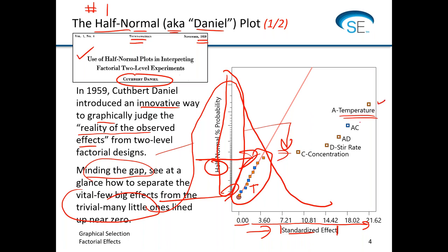As we continue picking off effects, the next biggest is the interaction of A with C (concentration), which also stands alone as a main effect. Then we have the A-D interaction, which includes parent term D, also chosen as a main effect. So we have an interesting family of effects involving A, C, and D, and two children: the A-C and A-D interactions. This is representative of a fairly sophisticated situation only revealed by doing two-level combinations — you would never see this by doing just one factor at a time.